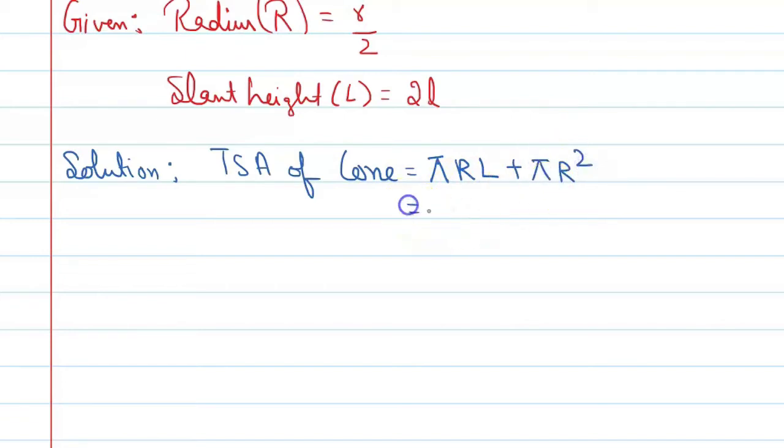You can write it like this: pi R, bracket open, L plus R. Now look at the values that we have given in the question, that we have here. When we put values here, we have to see what value is.